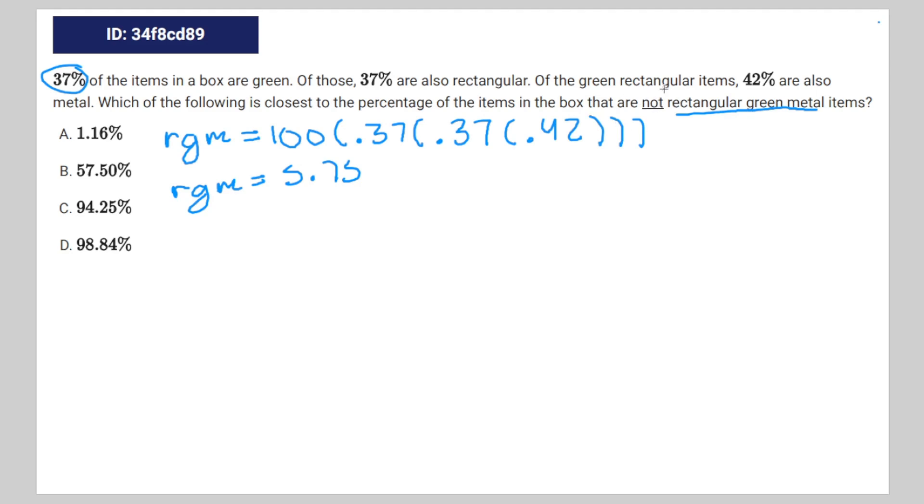We're looking for the items that aren't. So we're going to take this number and subtract it from 100. That's going to be 100 minus 5.75 is equal to 94.25. Therefore, C is the correct answer.